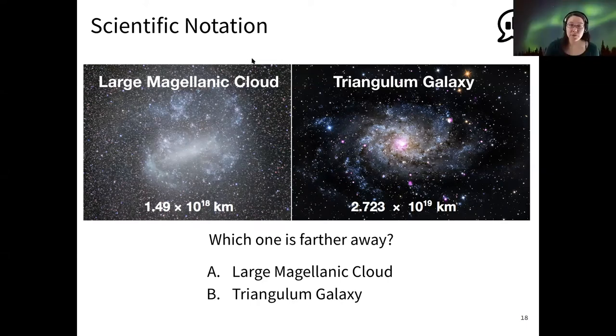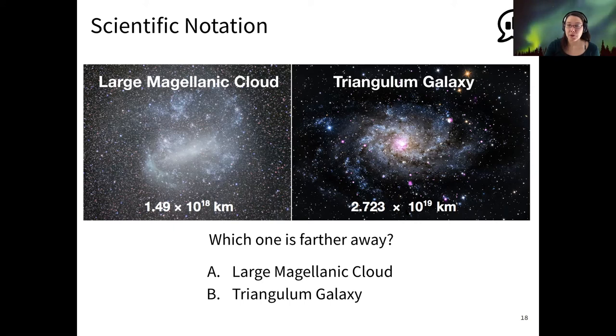Yep, just choose the one with the biggest exponent. So that would be the Triangulum Galaxy with an exponent of 19 versus the LMC with an exponent of 18. So pretty simple rules. And I hope this illustrates the value of our scientific notation instead of looking at all those zeros.